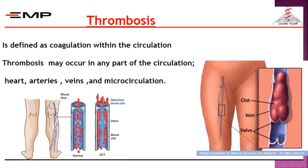Thrombosis is defined as coagulation within the circulation, and this may occur in any part of the circulation — inside the heart, arteries, veins, and microcirculation.